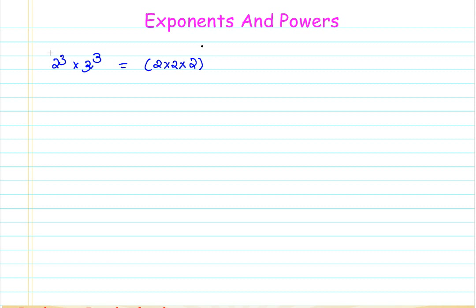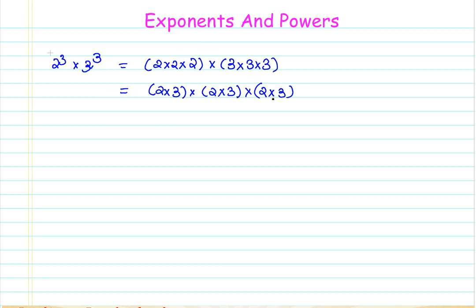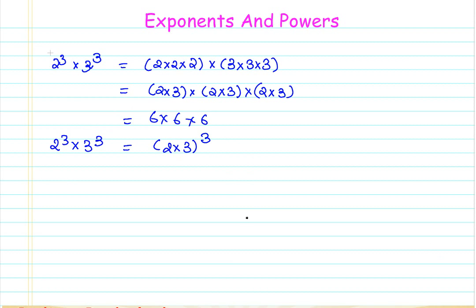Two raised to three cross three raised to three — to simplify this, just applying the associative property, that gives me six cross six cross six, or I can say it is two cross three raised to three. That means two raised to three cross three raised to three is two cross three raised to three. Let's take one more example to understand this property.